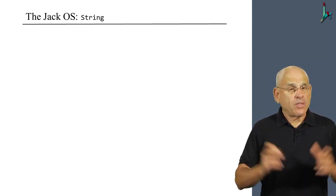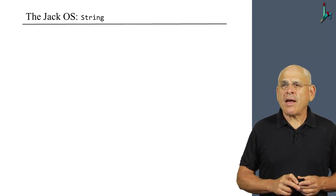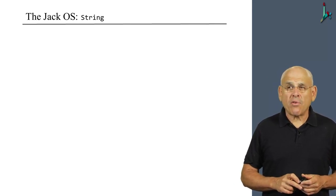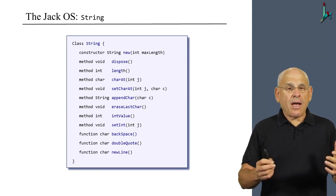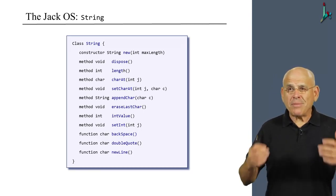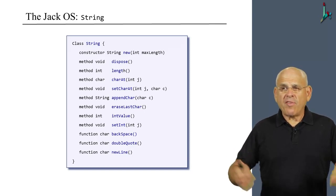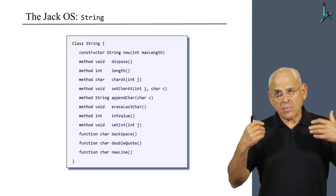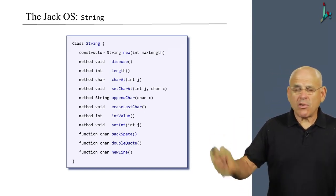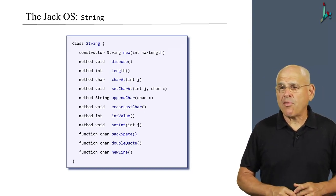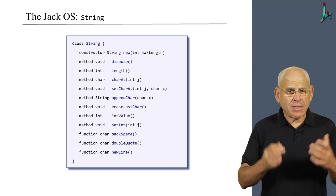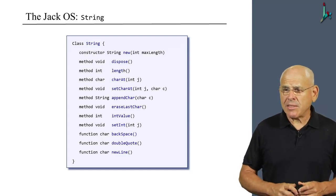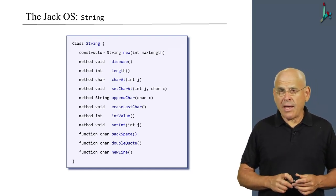Then we have, just like Java, another very useful class which is a string. The string class provides a string abstraction. It features a constructor for creating strings, a bunch of self-explanatory methods for manipulating the current string, as well as some special characters like backspace, double quote, and new line.